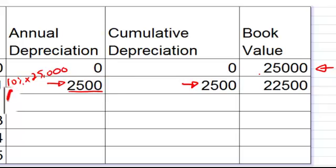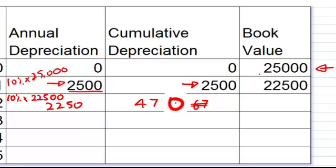Now the second year, you now find 10% of the $22,500 because that's what it's now worth, and as you can see what's happening is the amount it depreciates each year is dropping. So this will become $6,750 and this now will drop down to $20,250.